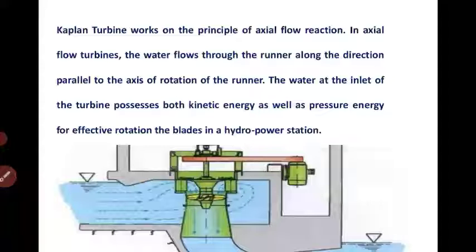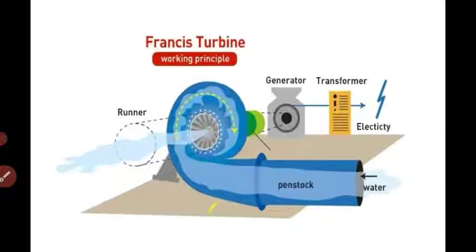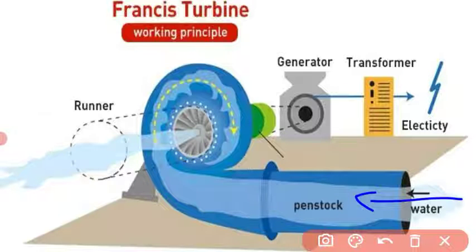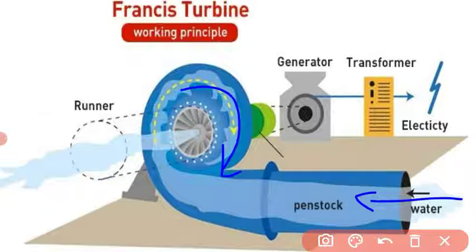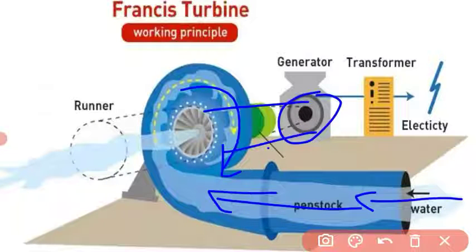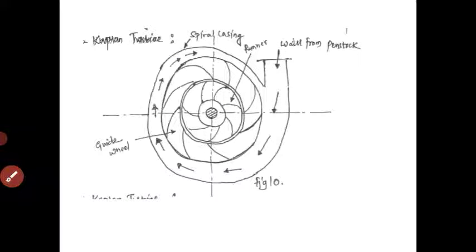Looking at the figure, water enters through the penstock and acts on the blades, creating rotation. The pressure drives the blades, developing mechanical power which is connected to the generator. The generator output then goes to the transformer to produce electricity. Construction details are shown in the slide.